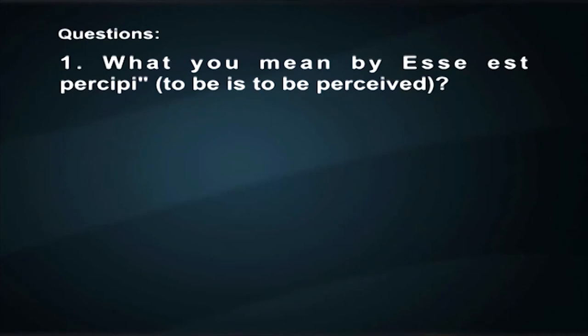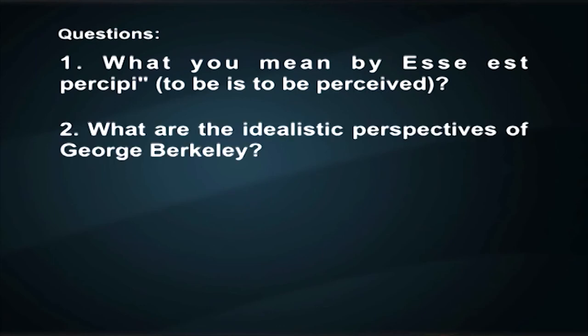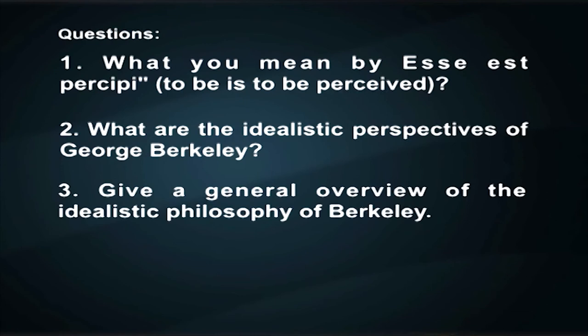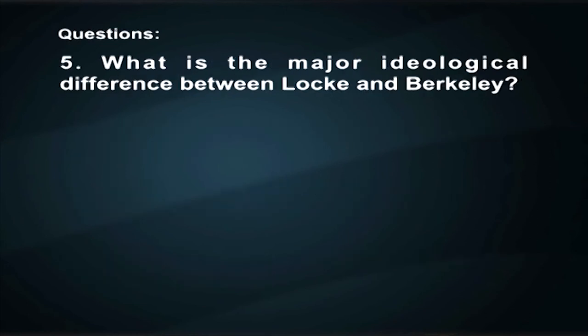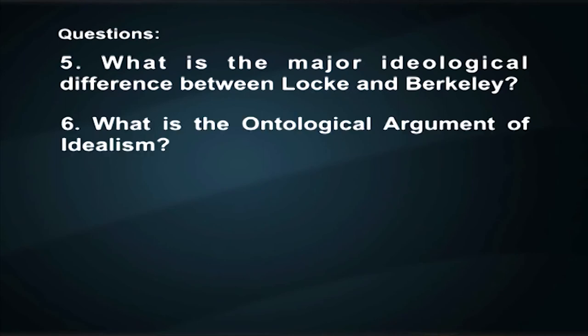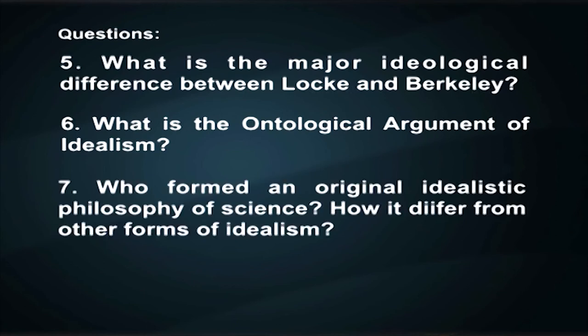Now you can try to answer the following questions. What do you mean by Esse est Percipi, or to be is to be perceived? What are the idealistic perspectives of George Berkeley? Give a general overview of the idealistic philosophy of Berkeley. What are the important works of George Berkeley? What is the major ideological difference between Locke and Berkeley? What is the ontological argument of idealism? Who formed an original idealistic philosophy of science? How is it different from other forms of idealism? Hope that you may go through the reference books for further reading.